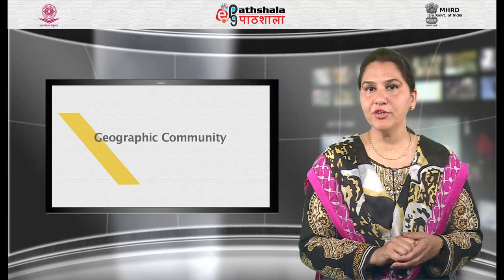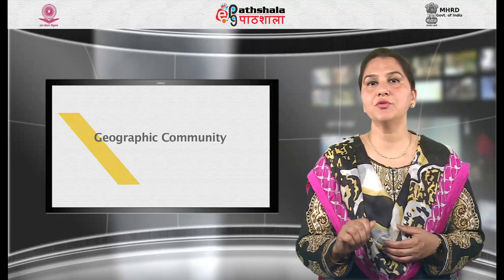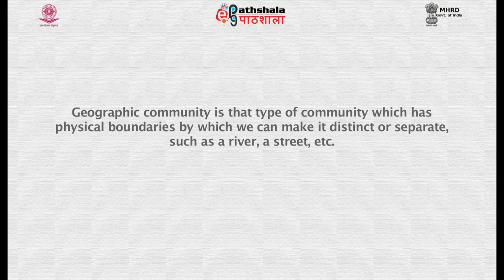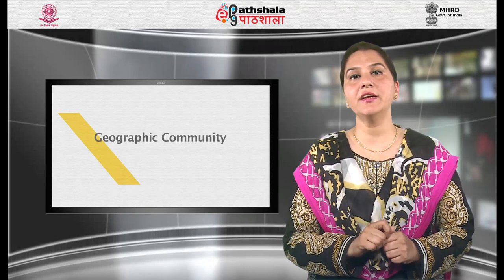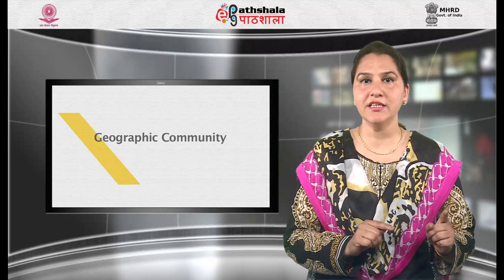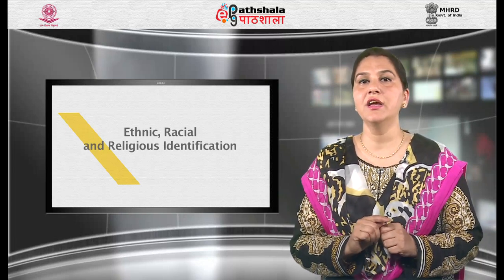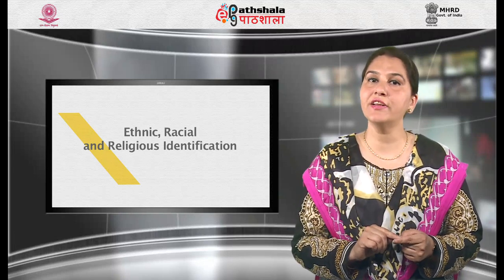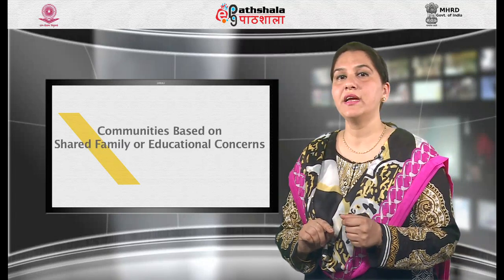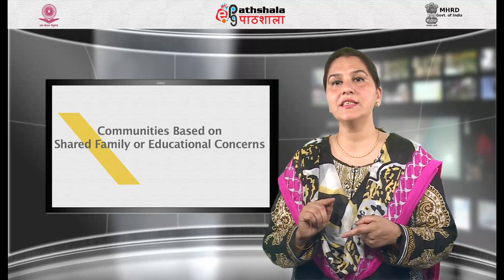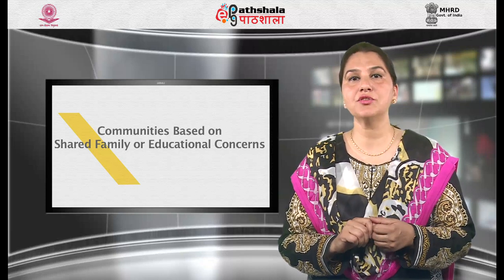There are basically three different types of communities. The first is a geographic community, defined according to its members' place of residence such as a village or district, which has physical boundaries such as a river or street. Within a geographic community you will find both communities of identity and communities of interest. The second type is ethnic, racial and religious identification, which commonly cuts across membership based on geographic location. The third type is communities based on shared family or educational concerns, which include parents' associations and similar bodies based on families' shared concern for the welfare of students.